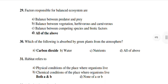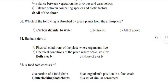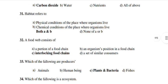Which of the following is absorbed by green plants from the atmosphere? Carbon dioxide is the right answer. Habitat refers to both A and B — the physical condition and chemical condition of the place where organisms live. A food web consists of a portion of a food chain, an organism's position in a food chain, and interlocking food chains.